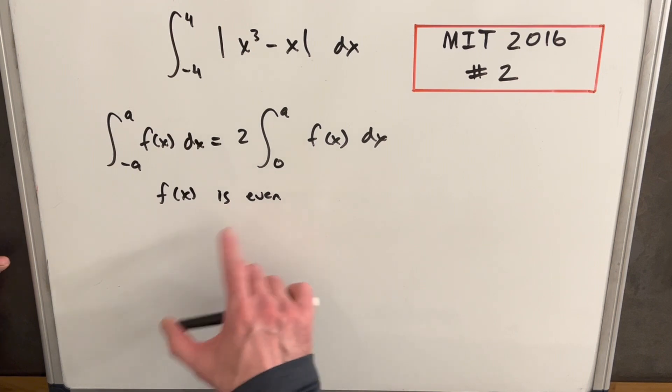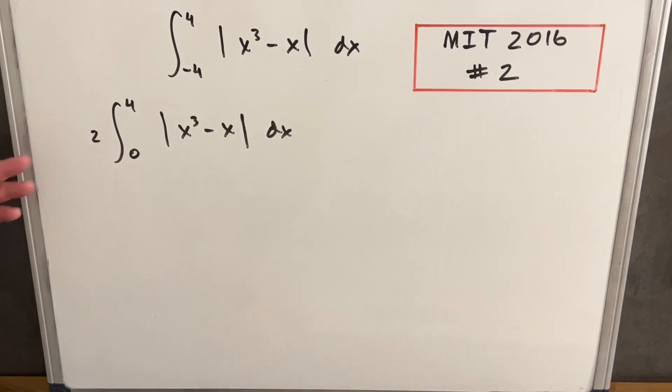And we didn't have to do that, but I think it's going to make our evaluation a little simpler later on. Okay, so after all that, all we did was brought a two out front and changed our boundaries, but we still haven't addressed the absolute value.